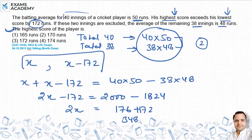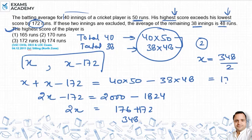So 2x equals 348, which means x equals 348 divided by 2, that is equal to 174. The highest score we assumed was x, and x equals 174. This means option 4 is the correct answer.